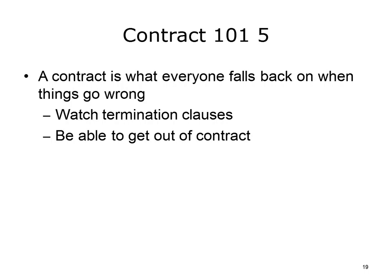Another important concept is that a contract is what everyone falls back on when things go wrong — and at some point, they will. As you review a contract and proceed through the negotiation, always keep an eye on the termination and the out clauses. There come times that things will not work out as you thought, and things will go bad. Make sure you have placed due diligence in the review so that you can get out of the contract if necessary.